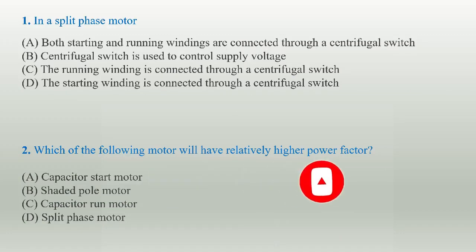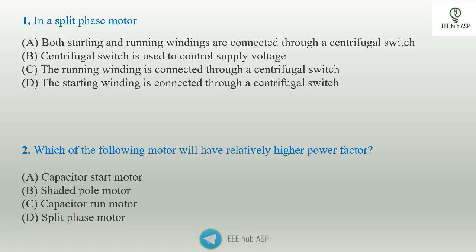First of all, this is the split phase motor. There are two types of windings: starting windings and running windings. The starting winding is in series with a centrifugal switch. At 70% to 80% speed, the centrifugal switch will automatically open, disconnecting the starting winding, and the motor runs on the running winding.